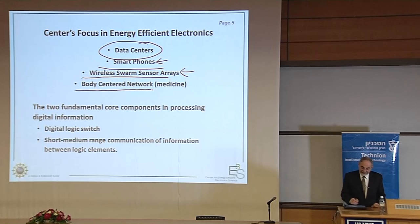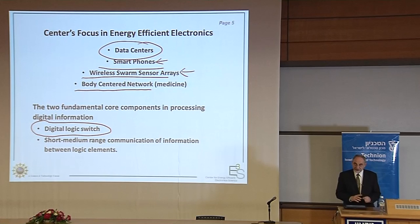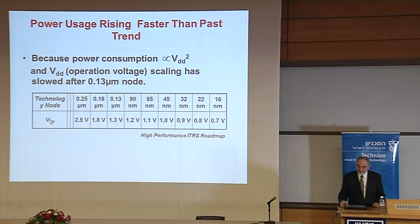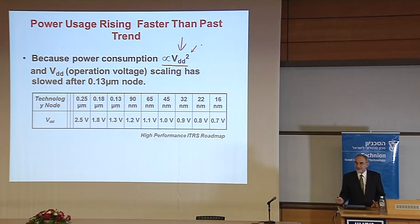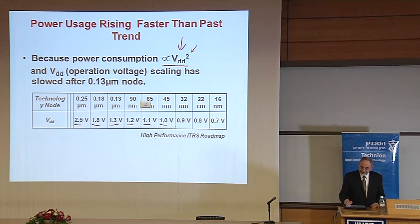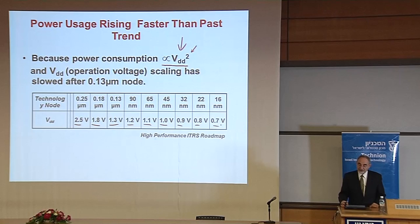The main thing I'm going to emphasize is the digital logic switch — essentially the transistor — and how we have to replace it with a device that is more efficient. How do we parameterize energy consumption? It has to do with voltage. Power goes as the square of voltage. The powering voltage VDD for digital circuits has gone down as we've made everything smaller, but now it's saturated. We're stuck near one volt, and we need to go much lower to achieve what's possible. We're consuming too much power.